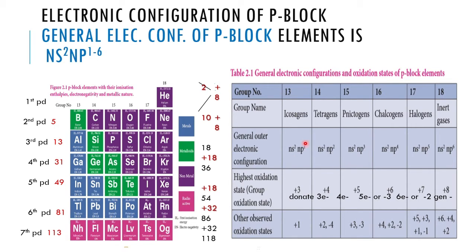For the boron group (Group 13), the electronic configuration is ns² np¹ — meaning the outermost shell has three electrons. By donating three electrons it achieves the octet rule, exhibiting a +3 oxidation state. Accepting five electrons is practically impossible, so donating three electrons is preferred, giving +3 oxidation state.